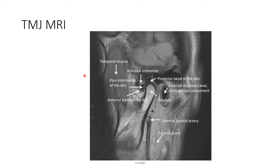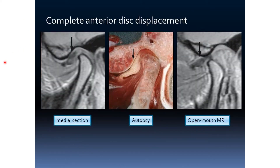This is an MRI of the TMJ region. You can see the different anatomy here — this is the condylar head, this is the external auditory meatus disc, the posterior part of the disc, the anterior band of the disc, and the middle portion of the disc, showing how clearly the disc can be visualized. Comparatively, this MRI image of the medial section of the disc alongside an autopsy image shows the condylar head and disc. On the open mouth MRI, the disc appears to be anteriorly displaced.